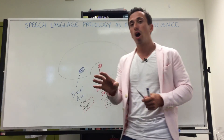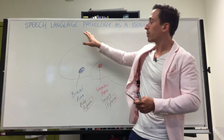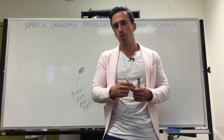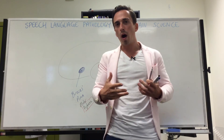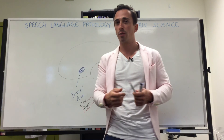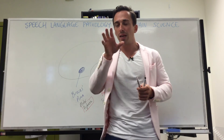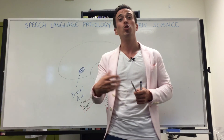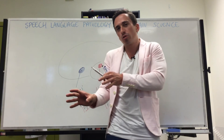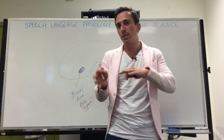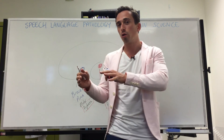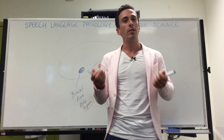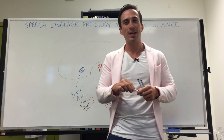These are some very important terms and individuals that highlighted speech language pathology as a brain science. Hopefully this is a nice introduction as to why speech language pathology should be investigated as a brain science or at least as a neuroscience. This is an intro — we're going to start talking about more specific parts of the brain at the cortical region and also at the subcortical region. If you have any questions, please feel free to send me an email.